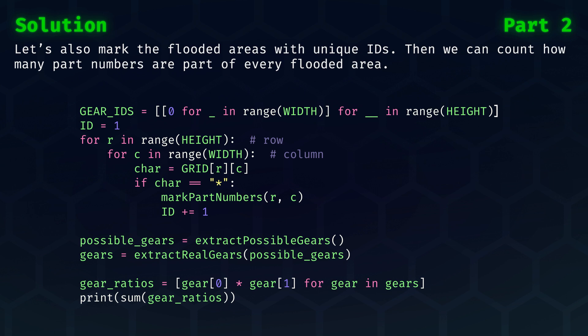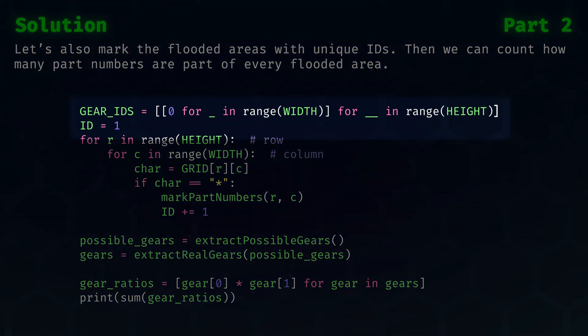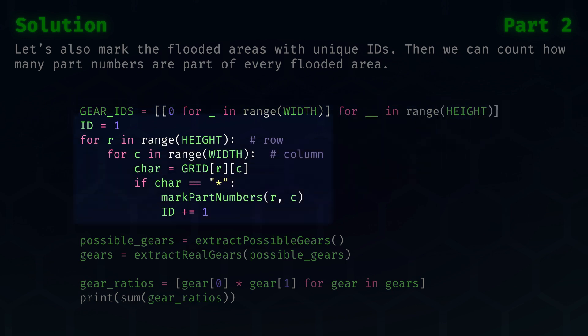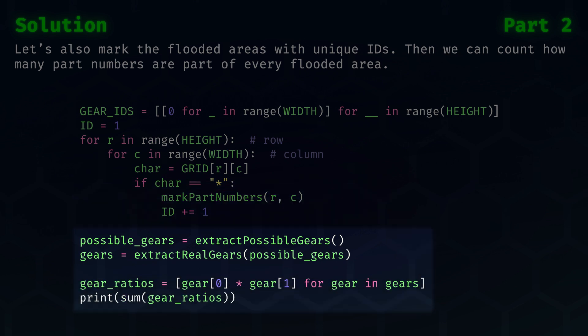Every area with only two part numbers shall be gears. To do this, we can modify our Is Part Number grid to a gear ID list that we initialize to 0, where 0 indicates that a cell of the schematic grid is not assigned to any area. Then we set ID to 1, and we start numbering from there. In our loop over the grid, we only start flooding when the character is a star. After flooding, we increment our ID.